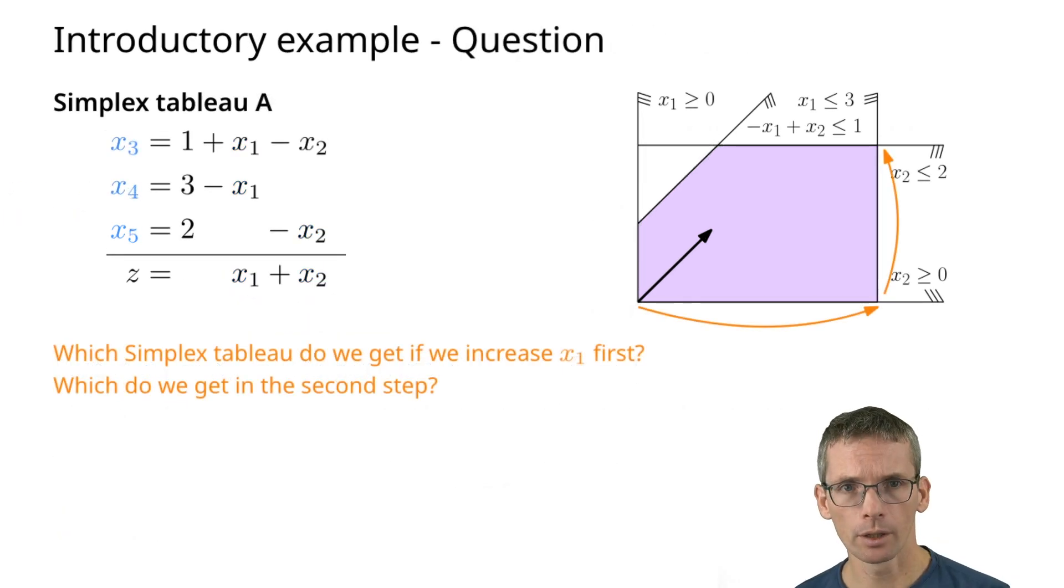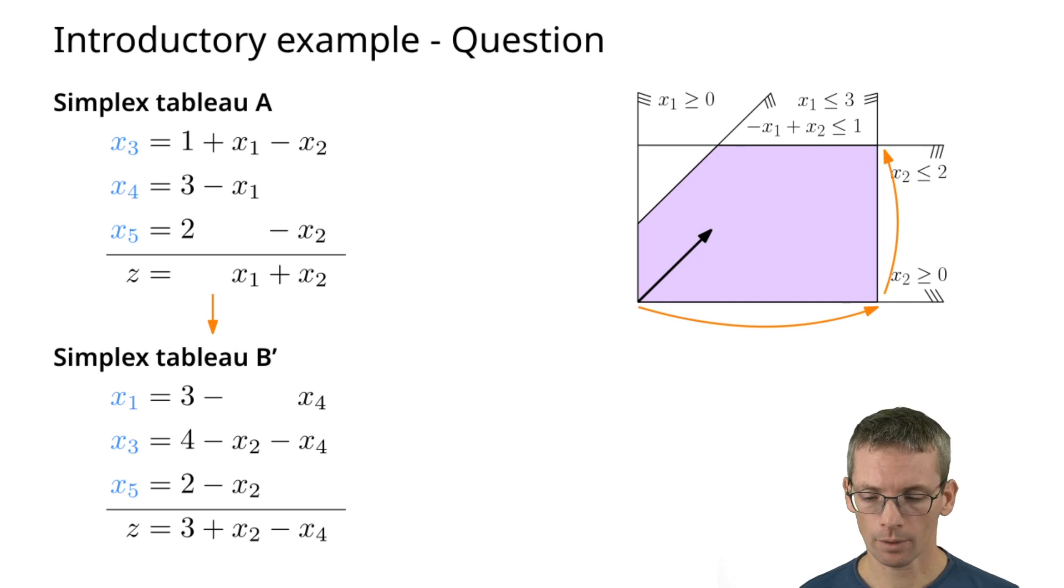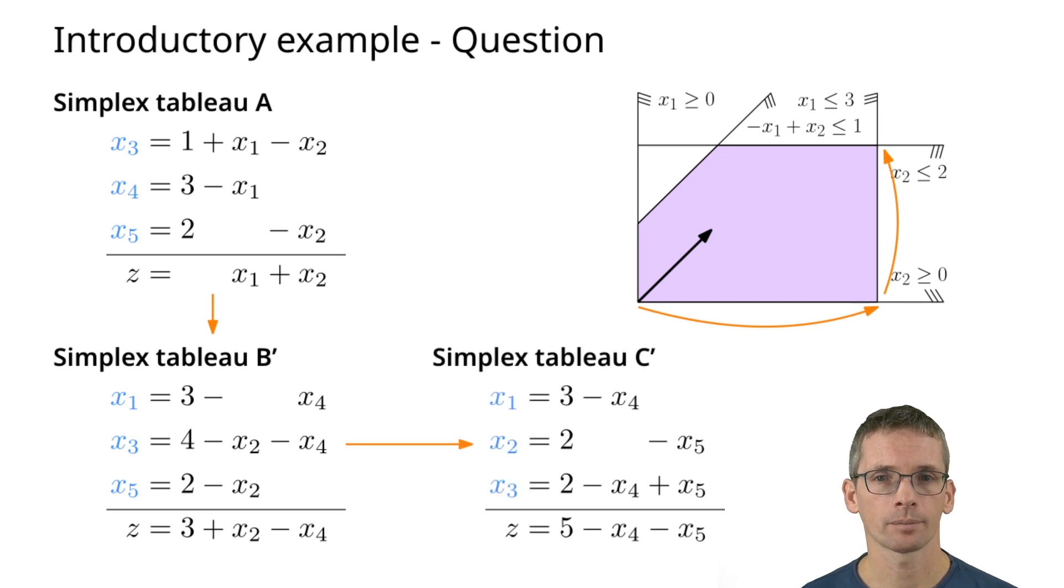And exactly this I would suggest you try now. This is our initial simplex tableau. Now do the steps to get to the optimum by first swapping in x1. This will mean that you are going to draw two simplex tableaus. The first simplex tableau looks like this. The second simplex tableau looks like that. And this already wraps up our initial example.